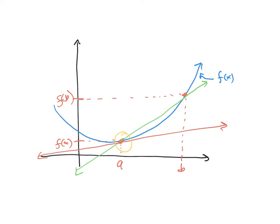0 over 0 is something we deal with — that's our indeterminate form from limits. So this has something to do with limits, and we already showed on the last slide that it does. We just need a different language here. Let me give this distance between a and b a name. Since we're going to shrink the distance between a and b, it'd be nice for it to have a name — we're going to call it h.